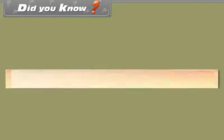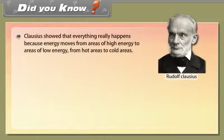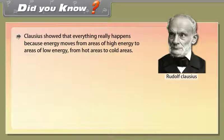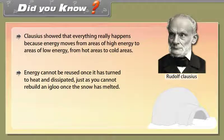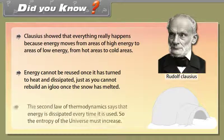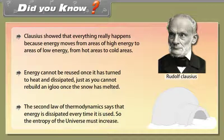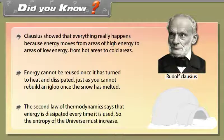Did you know? Clausius showed that energy moves from areas of high energy to areas of low energy — from hot areas to cold areas. Energy cannot be reused once it has turned to heat and dissipated, just as you cannot rebuild an igloo once the snow has melted. The second law of thermodynamics says that energy is dissipated every time it is used, so the entropy of the universe must increase.